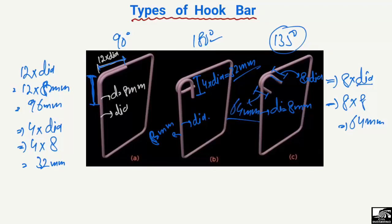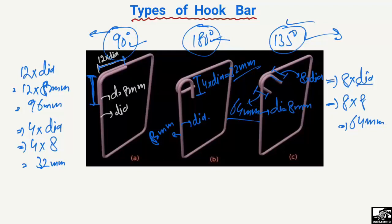So we can see there are three different hooks used in different members. Sometimes we need a 90 degree hook, sometimes 180 degree, and sometimes 135 degree — all depending on the load conditions. In seismic regions, we must provide the 135 degree hook. Where there is no seismic demand, the 90 degree hook can be used. When high bond strength is required, we must provide the 180 degree hook in our stirrups or ties. These bending lengths are recommended by different codes.